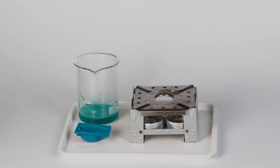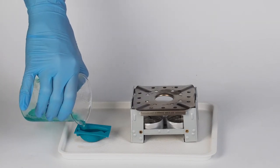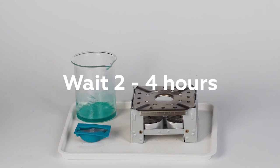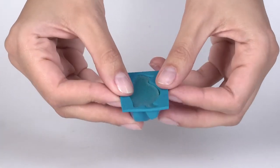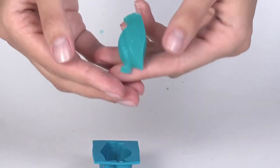Then pour the liquid into the mold provided and wait for two to four hours till the mixture solidifies. Now remove the molded figure. You have made a penguin out of a potato.